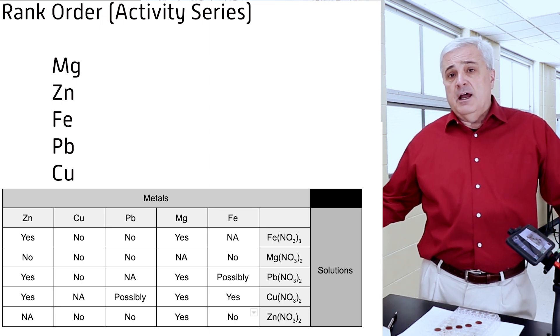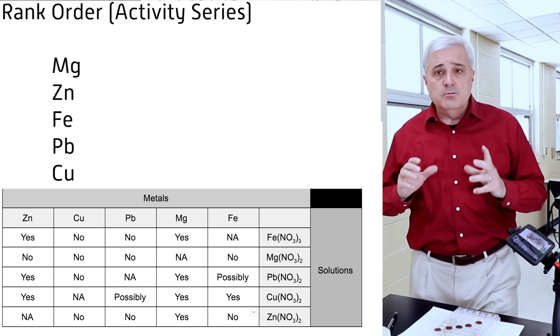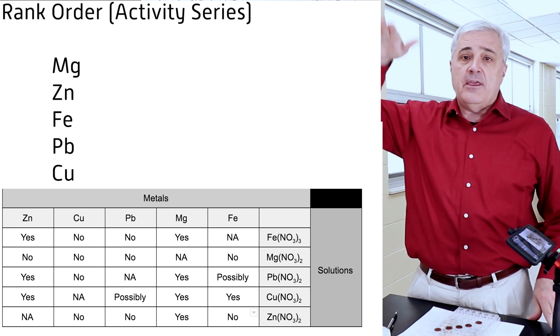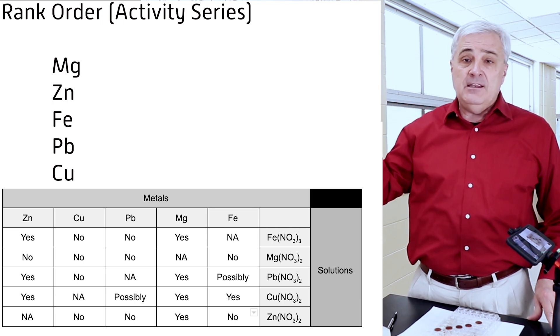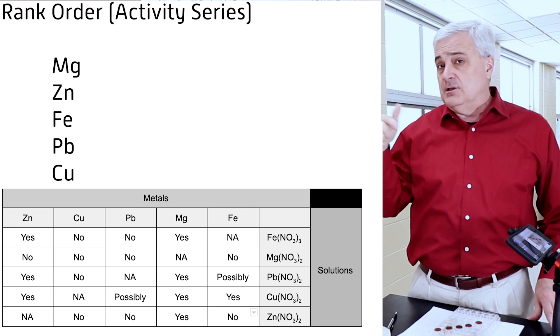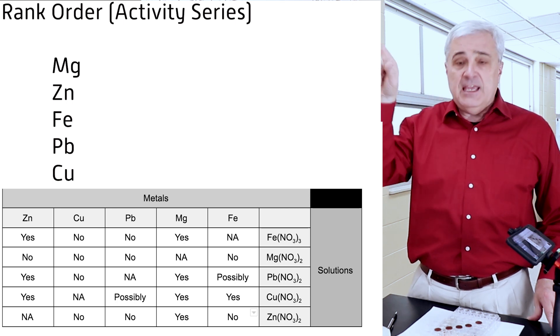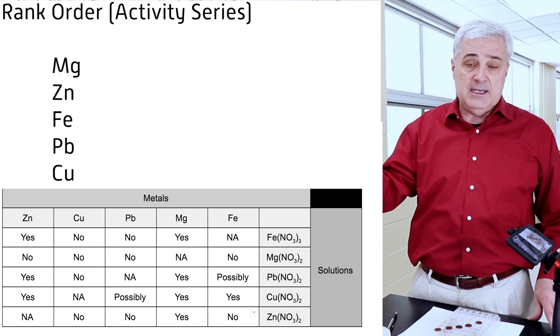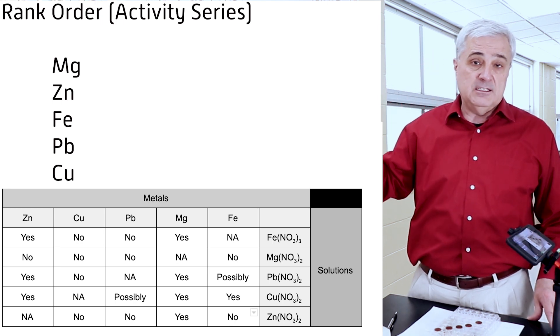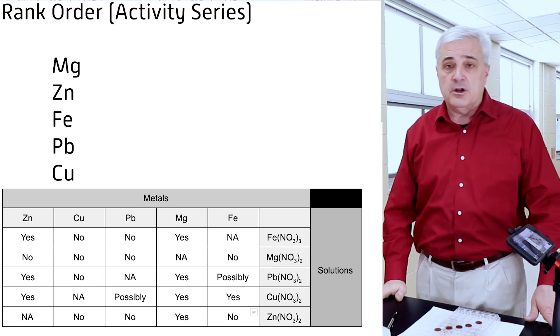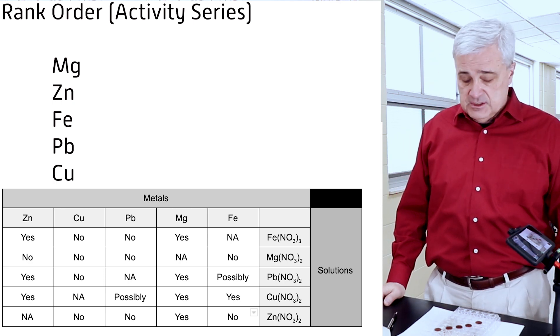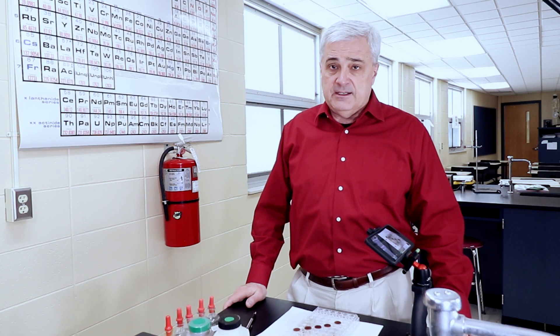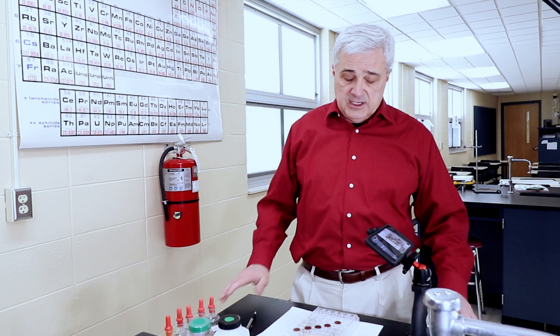So that's it. All right. Activity series. What is most active and then what is least active and then how do they rank in the middle? That's basically what it is. When you're predicting products of a reaction, you can look at the activity series and say, well, this can't happen because magnesium is more reactive than copper. So the copper cannot take the place of the magnesium. Therefore, this reaction will or will not take place. We can predict what's going to occur in the single and double replacement reactions based on the activity series.